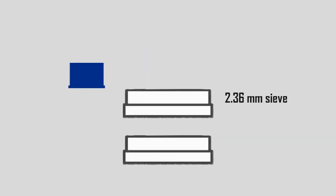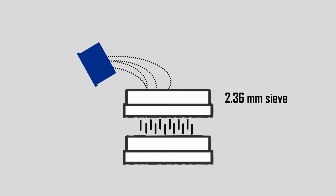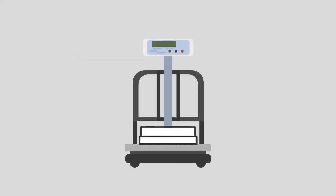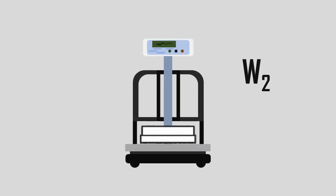After 15 blows, the crushed aggregate is removed from the cup and sieved on a 2.36 mm sieve. The fraction passing through this is weight and let it be W2.